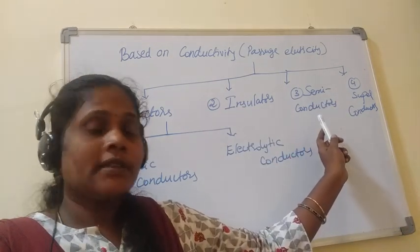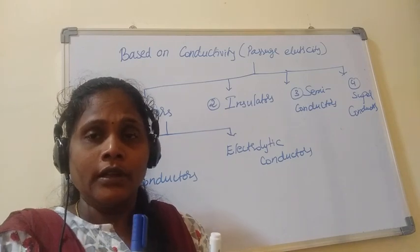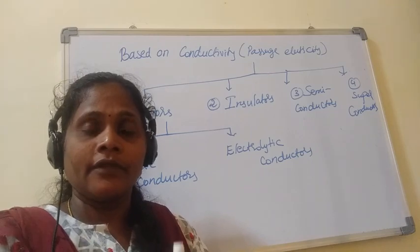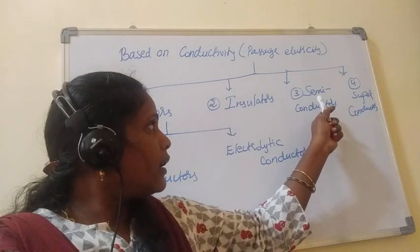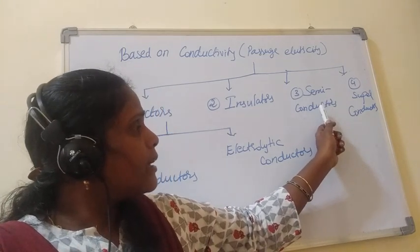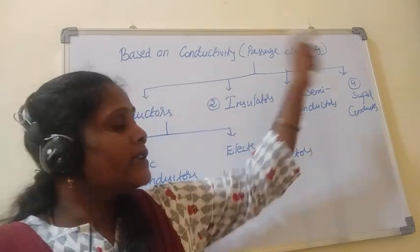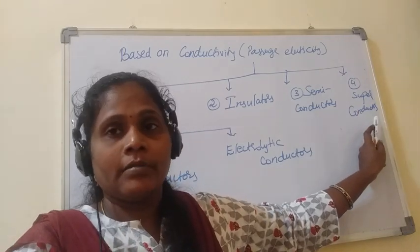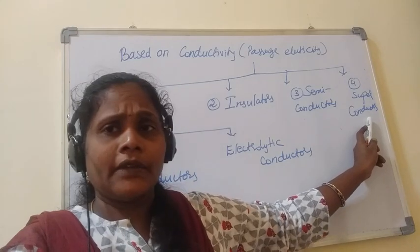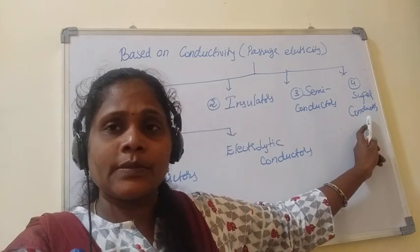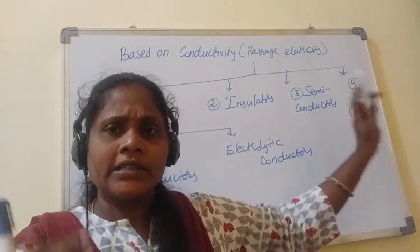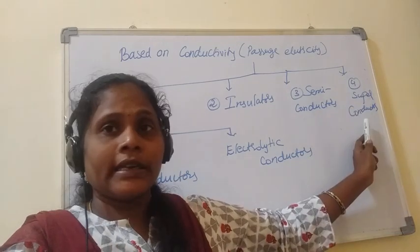Semiconductors: metals doped into silicon or germanium — these are examples doped with group 13 and 15 elements — are called semiconductors. Their conductivity is between conductors and superconductors. Superconductors, as the name indicates, have the highest conductivity — least resistance, least obstacle to electricity passage.